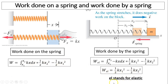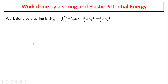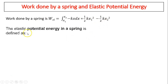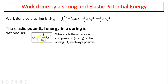These two should be opposite of each other. 'El' stands for elastic. Work done by the spring on the block equals one-half kx₁ squared minus one-half kx₂ squared. Let's define the elastic potential energy as U_el = one-half kx squared, where k is the spring constant and x is the extension or compression — the difference between the current position and the initial position. U_el is always positive, kind of like kinetic energy.